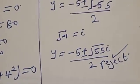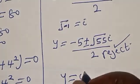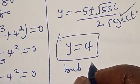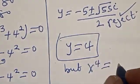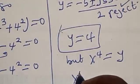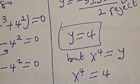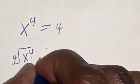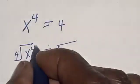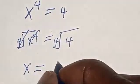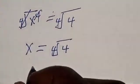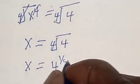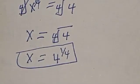The only real solution is y equals 4. Since x raised to power 4 equals y, we have x raised to power 4 equals 4. Taking the fourth root of both sides, the fourth root of x to the power 4 equals the fourth root of 4. Therefore x equals the fourth root of 4, which is 4 raised to power 1 over 4. That is our final answer.